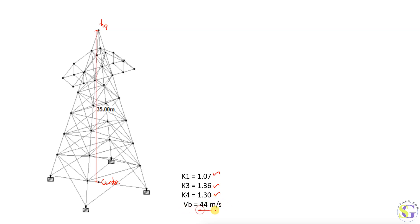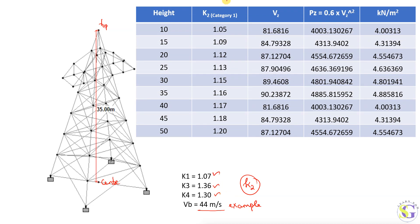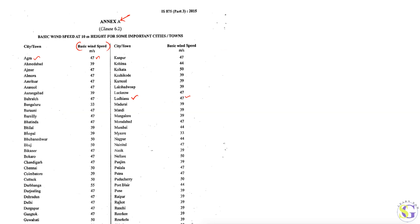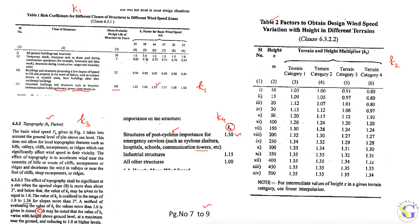For this numerical, I am taking a basic wind speed of 44 meters per second. The unknown is K2, which should be determined with respect to each height. Taking Category 1, K2 is determined with respect to height for a total tower height of 35 meters. Looking at Table 2, there is no value for 35 meters, so we need to interpolate — specifically between 25 and 35.